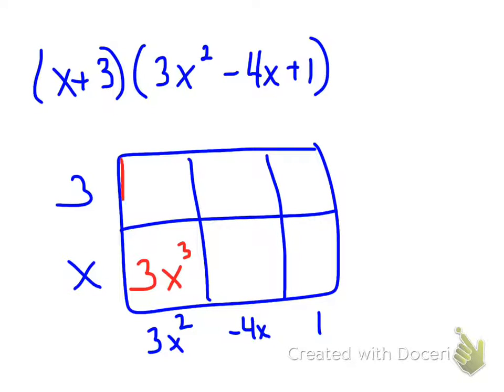Above that, I have 3 times 3x squared. That will give me 9x squared. This box is going to be x times negative 4x, which will be negative 4x squared. Above that, I'll have 3 times negative 4x. That will be negative 12x.